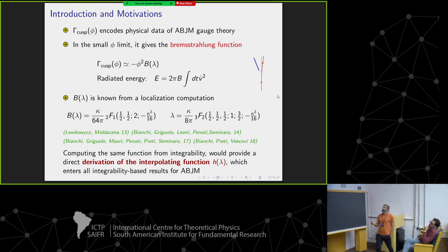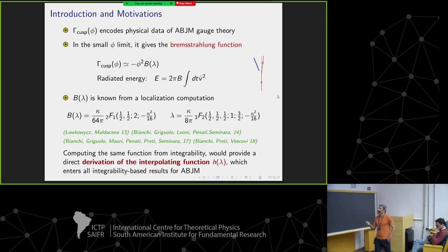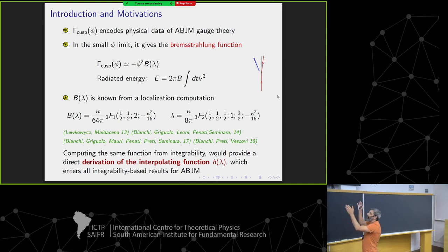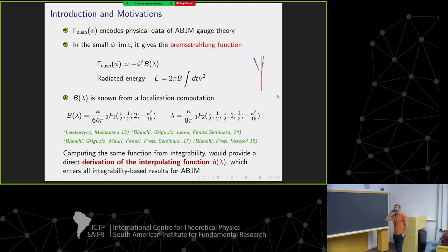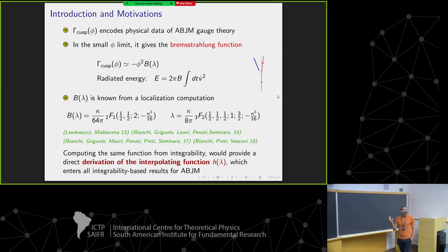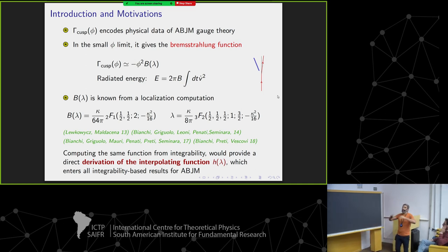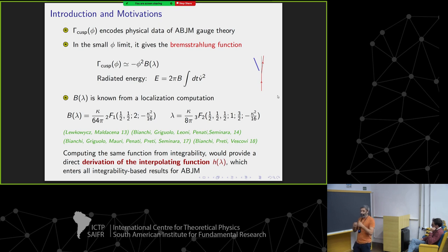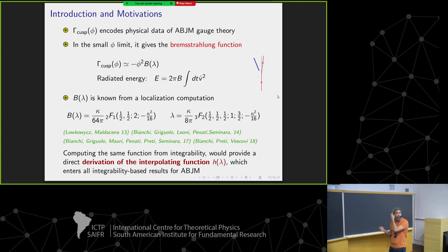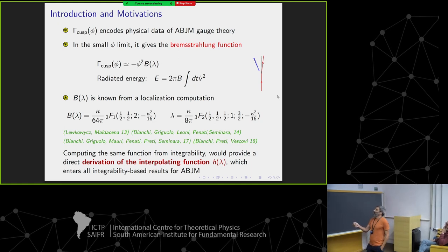In some theories — and ABJM is one example — the Bremsstrahlung function can be computed exactly as a function of the coupling. You might ask why you'd be interested in analyzing something already computed exactly. Well, if we manage to compute this Bremsstrahlung function using integrability, we would be able to derive the interpolating function H, which enters in all integrability computations in ABJM theory. Any computation you obtain using integrability is going to depend on this function H that, in principle, you don't know. This prescription I'm proposing is a way of deriving what the interpolating function is.